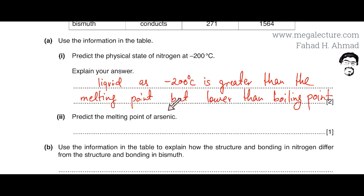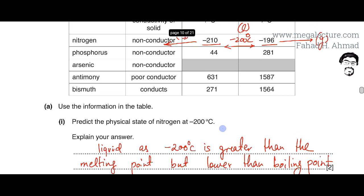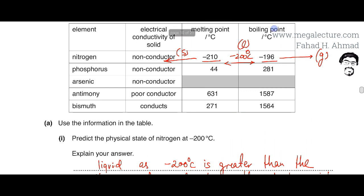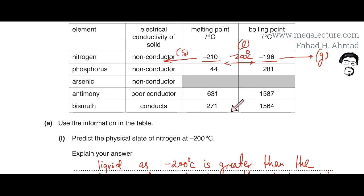The next part asks us to predict the melting point of arsenic. Looking at the table, the melting point of nitrogen is very low, then it increases, increases further, and then decreases toward the end. We need to predict the melting point of arsenic, which is probably going to be between the two neighboring values: 44 and 631.